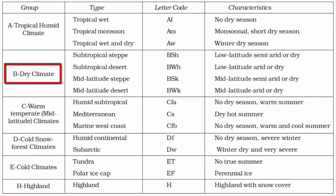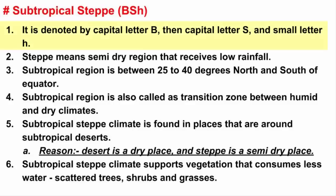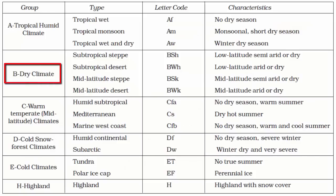In this video, we will learn about Subtropical Steppe climate. It is denoted by capital letter B, then capital letter S and small letter H. Capital letter B denotes the entire group which is the dry climate. Capital letter S and small letter H together denote subtropical steppe.